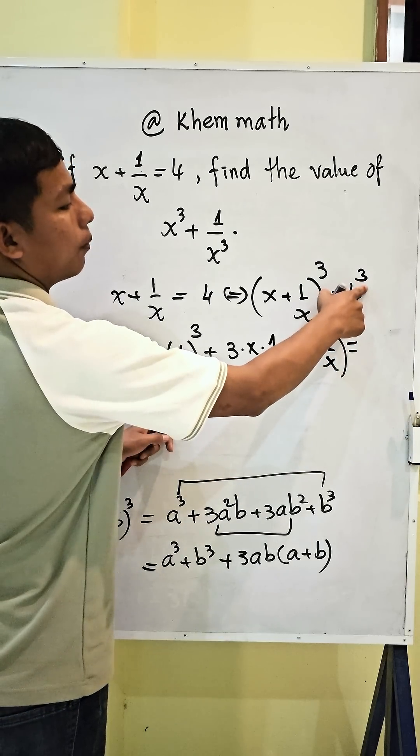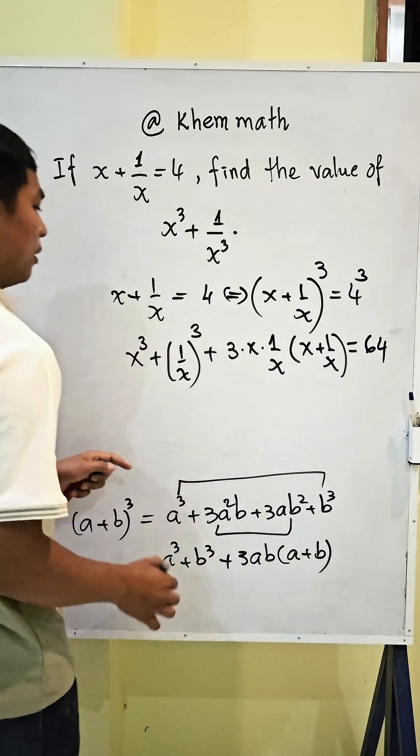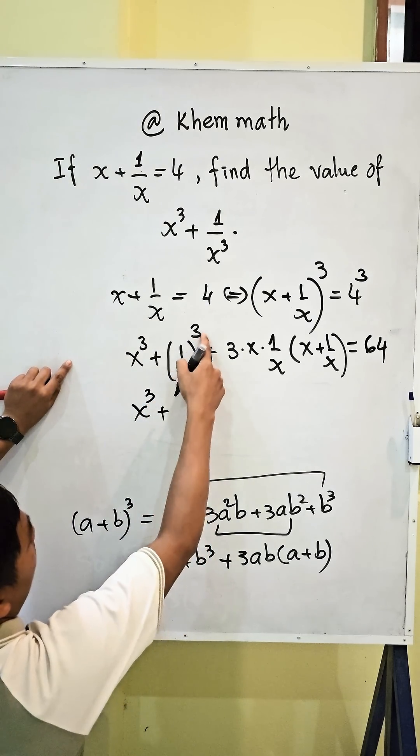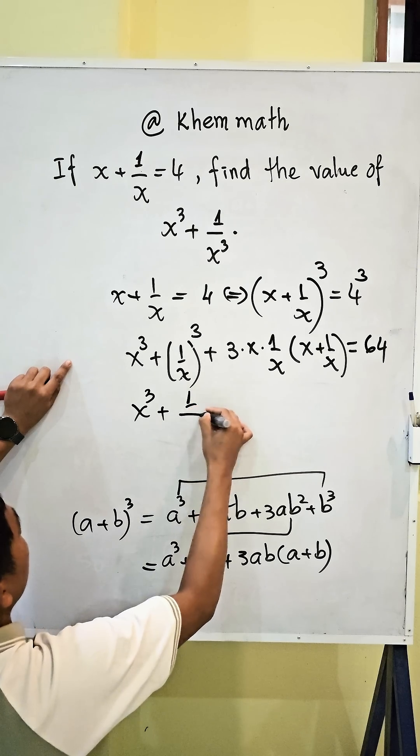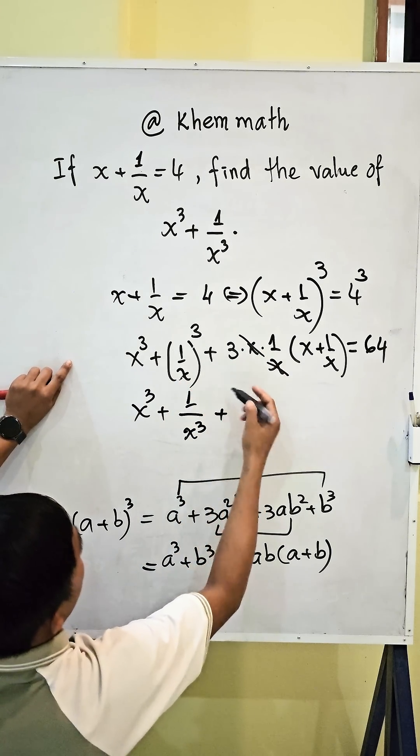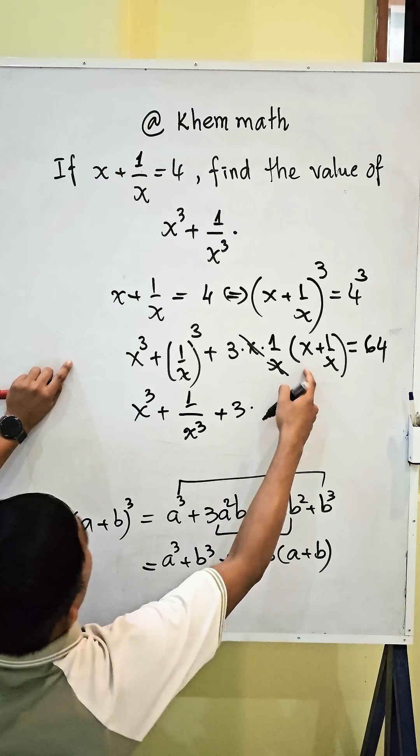It equals here 4 power 3 equals 64. And here we get this x power 3 plus 1 divided by x, all power 3. Now plus, to simplify, we get this 3 times here equals 4.